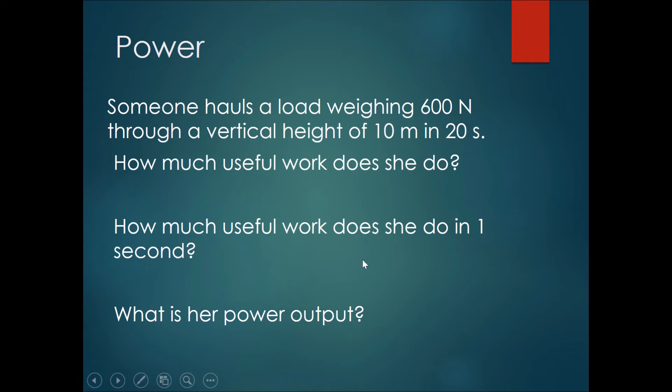Okay, now let's go through the answers. How much useful work does she do? Work done would be equals to force times the distance moved in the direction of the force. Therefore, the work done would be 600 newtons times 10 meters, getting you 6,000 joules of work.